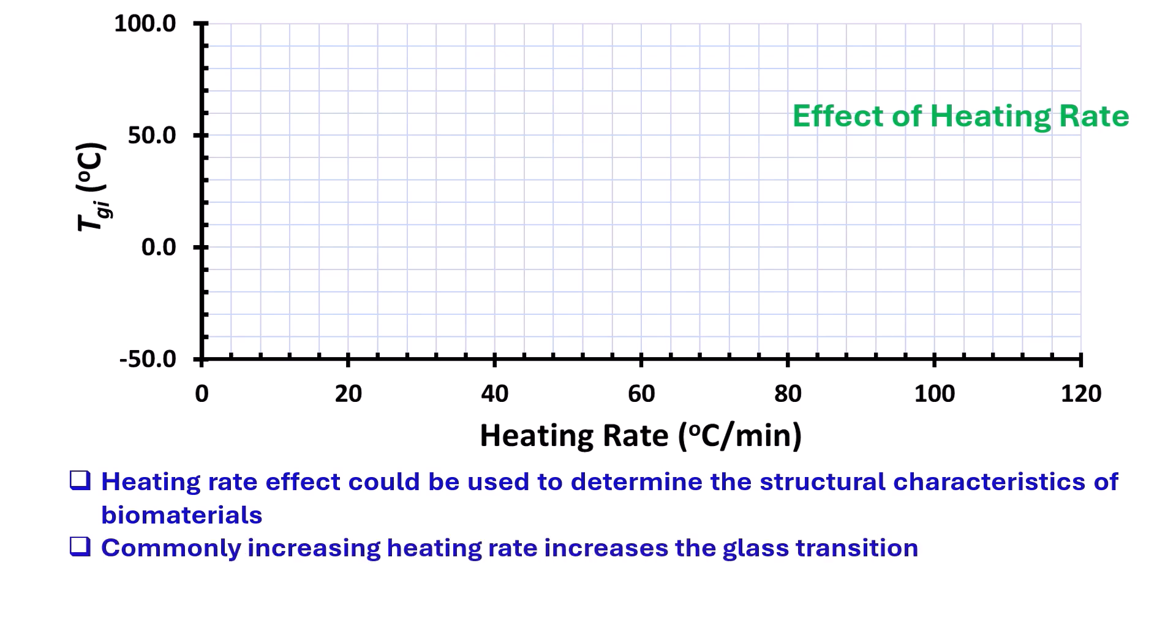Commonly increasing heating rate increases the glass transition, that is, it shifts to higher temperature. Therefore, the heating rate must be mentioned when measuring glass transition. Commonly, a heating rate of 5 degrees C per minute or 10 degrees C per minute is used to determine the glass transition.